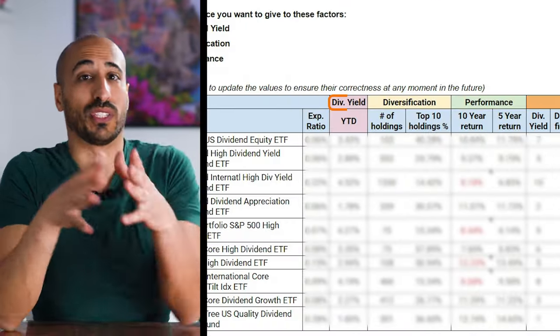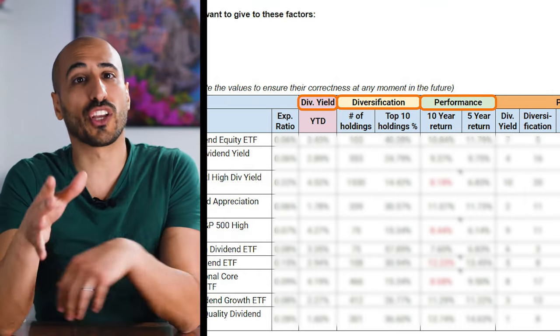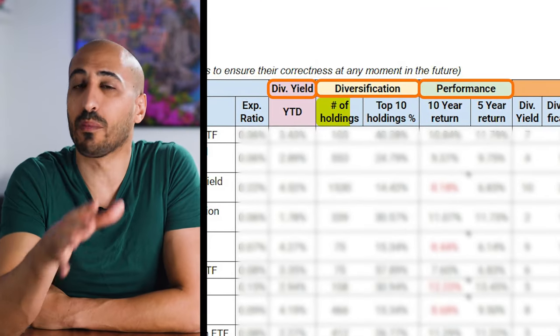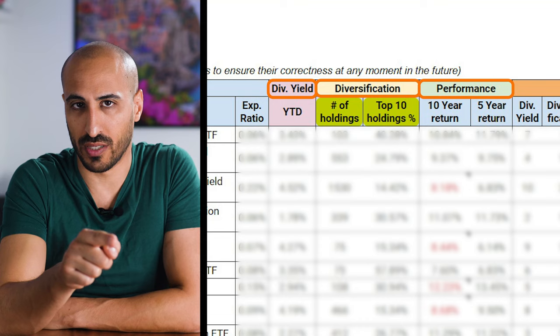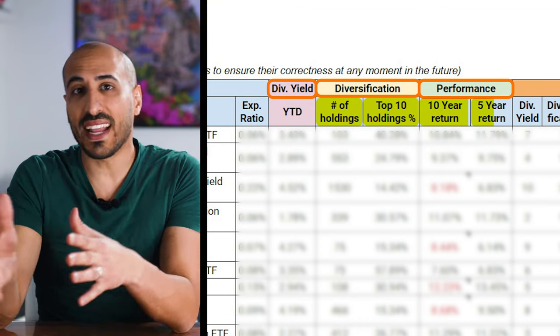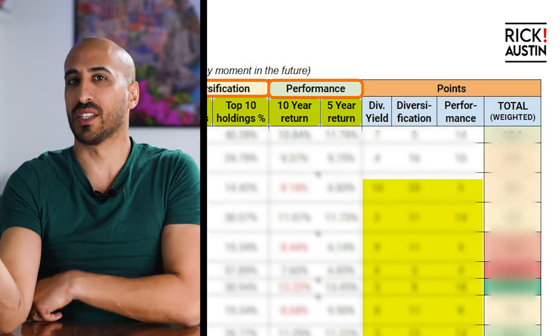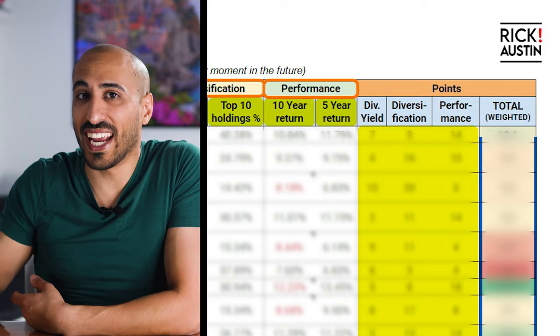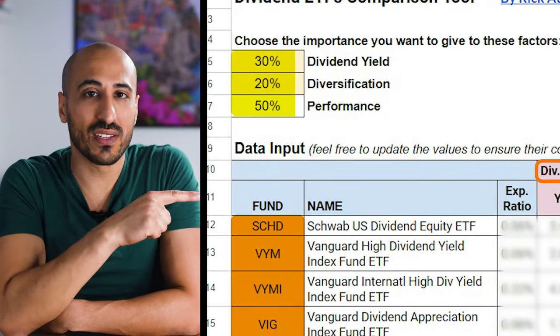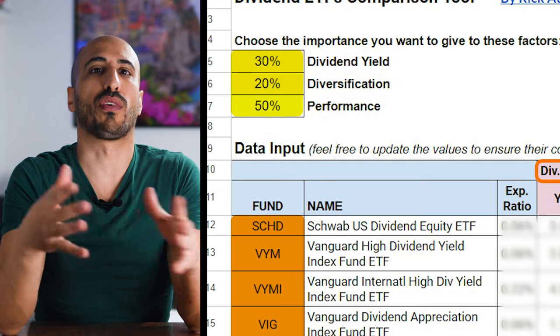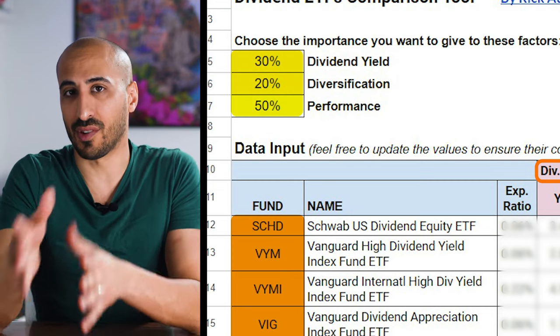For every ETF we're going to compare dividend yield, diversification, and performance. In particular, for diversification we're going to see the number of holdings and the top 10 holdings, while for performance we're going to see the performance of the last 10 and 5 years. In the end we're going to weigh these factors and the table will give us a grade for each ETF. You can define the weight or importance you want to give to the three criteria. This simplified table can't replace a careful analysis of the ETFs, so if you download this file, use it with caution or feel free to add other factors.